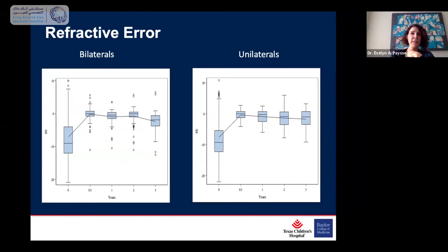These are the results on refractive error following out to five years. A lot of patients we lose to follow-up farther out, but we got a significant number with five-year follow-up. The bilateral and unilateral patients have very similar outcomes on spherical equivalent refractive error at time zero — they're more myopic and get close to plano with a little regression. This whole group was treated before we started using mitomycin. In the last two and a half years we've been using mitomycin, and the results are even better with less regression.